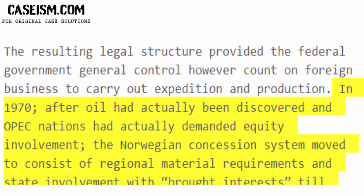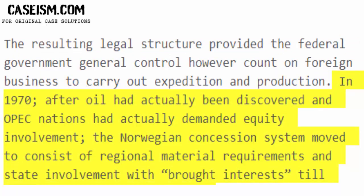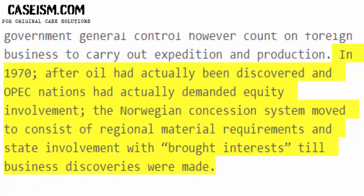In 1970, after oil had actually been discovered and OPEC nations had demanded equity involvement, the Norwegian concession system moved to consist of regional material requirements and state involvement with broad interest, until commercial discoveries were made.